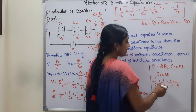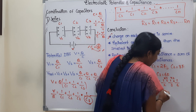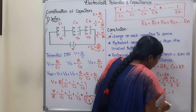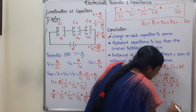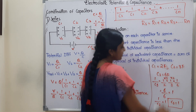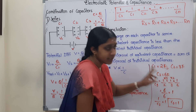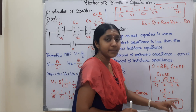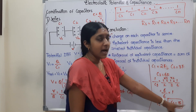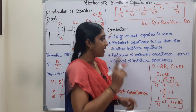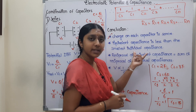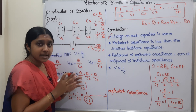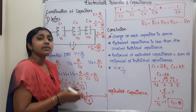Taking LCM of 6: 1/Cs = 3/6 + 2/6 + 1/6 = 6/6 = 1. So Cs = 1F. Comparing: C1 = 2, C2 = 3, C3 = 6, and Cs = 1. The equivalent capacitance is 1F, which is less than all individual values. So when capacitors are connected in series, the total equivalent capacitance is very small — less than the smallest individual capacitor.